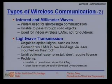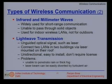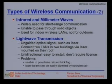Then we have light wave transmission. These are unguided optical signals such as lasers. We can have point-to-point links and interconnectivity between buildings. These are unidirectional and easy to install, and of course they do not require any licensing. The associated problems are they are unable to penetrate through thick fog or rain.